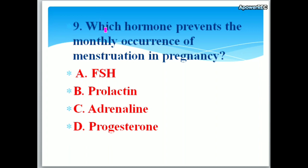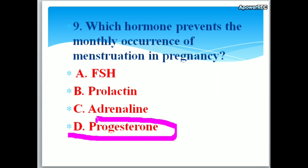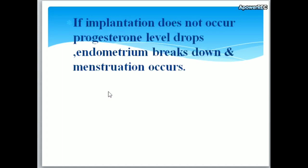Which hormone prevents the monthly occurrence of menstruation in pregnancy? Options: A. Follicle stimulating hormone, B. Prolactin, C. Adrenaline, D. Progesterone. The correct answer is progesterone. Progesterone prevents menstruation during pregnancy. If implantation does not occur, progesterone level drops, the endometrium breaks down and menstruation occurs. The endometrium is the inner layer of the uterus.